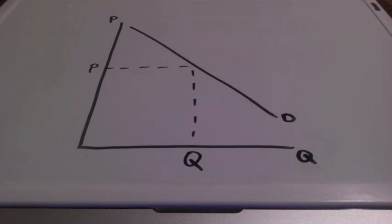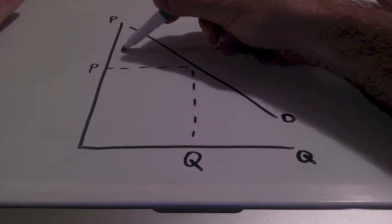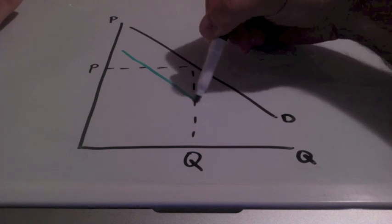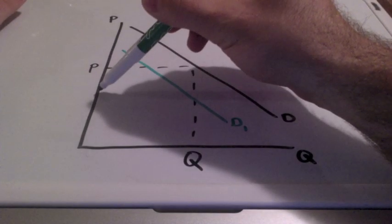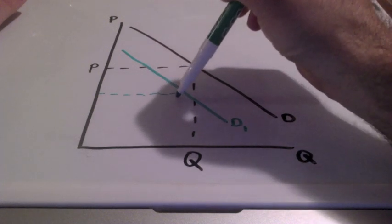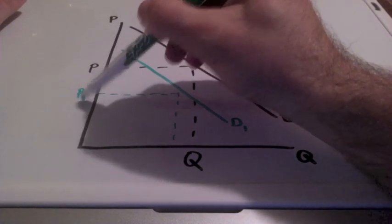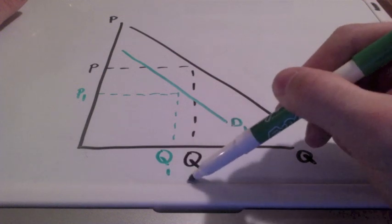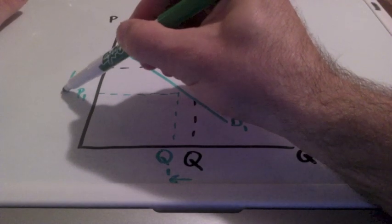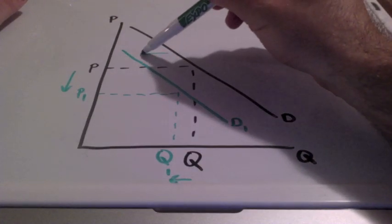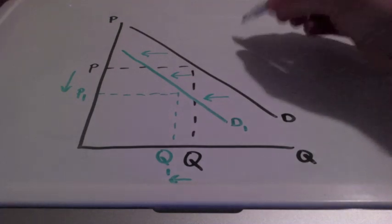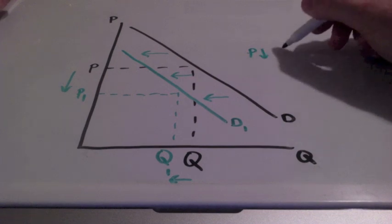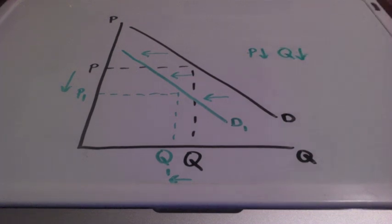the size of the market for anything besides an iPhone will decrease. So what does this look like? Our demand curve will shift to the left. Both prices and quantity will decrease. We call this a leftward shift in demand. And when we have a decrease in demand, both price and quantity will decrease.